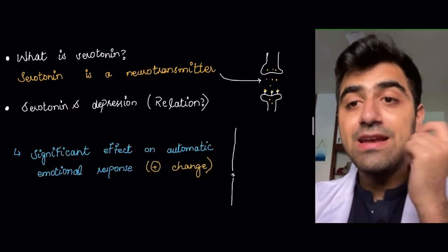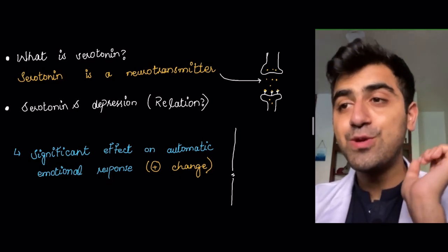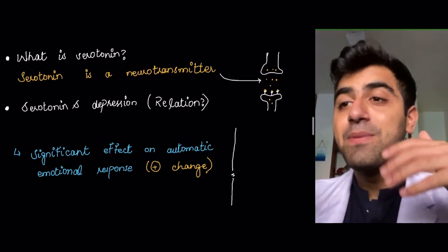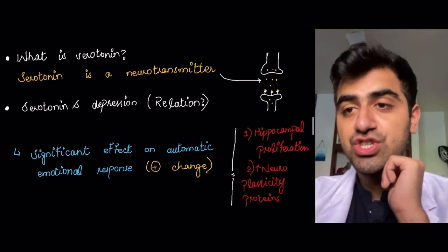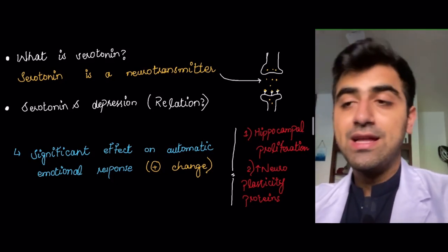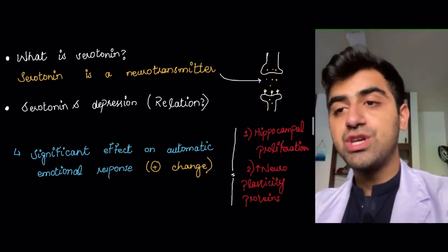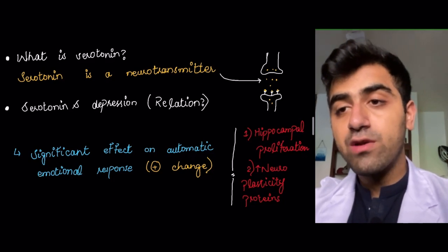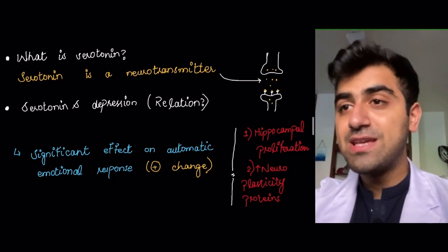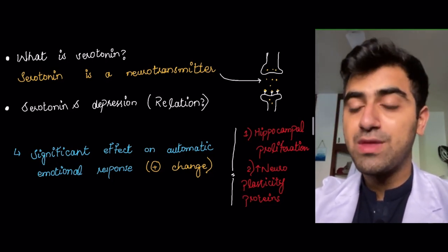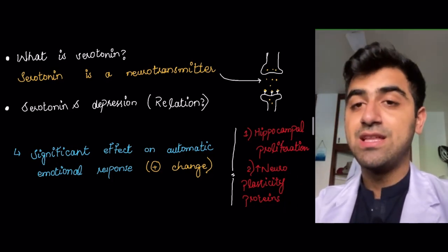Serotonin is related to depression. It has significant effects on the automatic emotional response — meaning how you respond to things becomes better; people react more positively and more happily. In addition to that, there are physical changes studied with more serotonin in the brain, including brain proliferation, neuroplasticity, and increased neuroplasticity proteins.